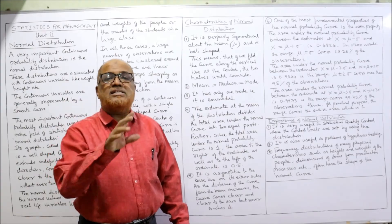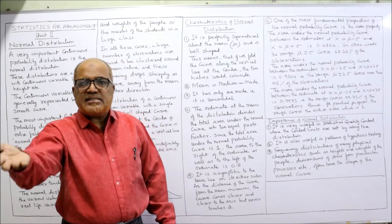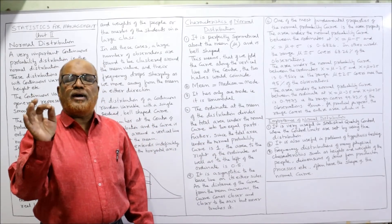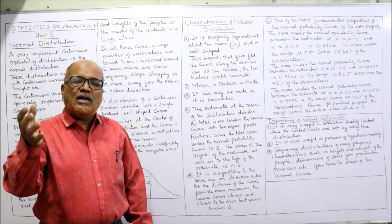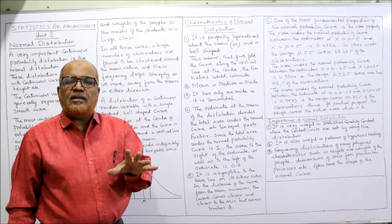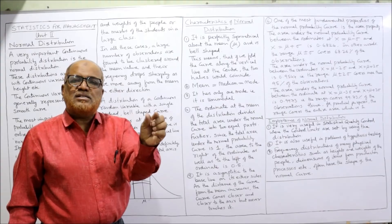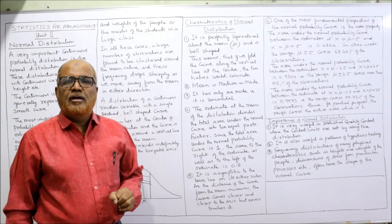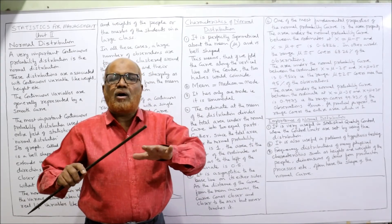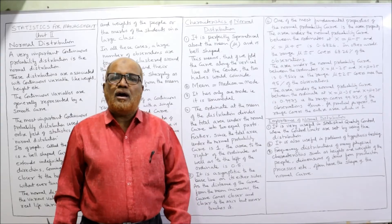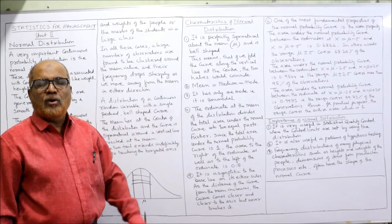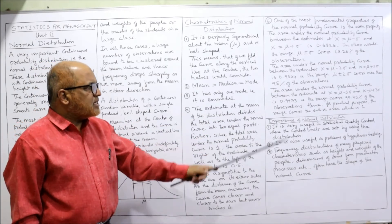The area under the normal probability curve between x = μ − 3σ and x = μ + 3σ is 0.9973, or 99.73% of observations — which is almost equal to 1. This means mean ± 3 standard deviations covers nearly the entire area of the normal curve. This is a main characteristic feature of normal distribution.